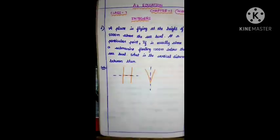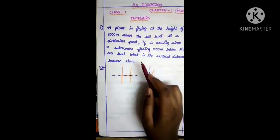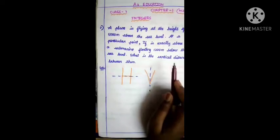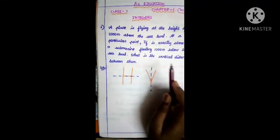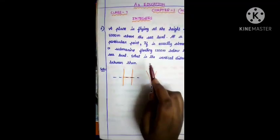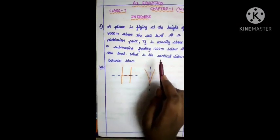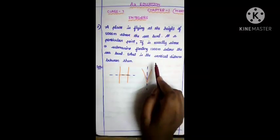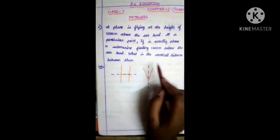A plane is flying at the height of 5000 meters above the sea level. At a particular point, it is exactly above a submarine floating 1200 meters below the sea level. What is the vertical distance between them?